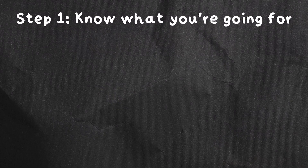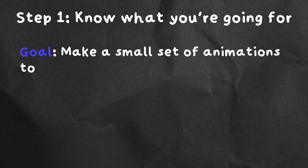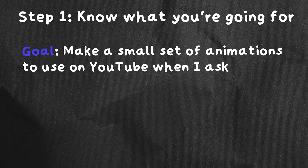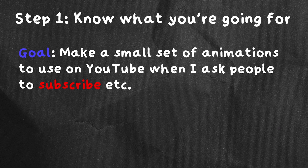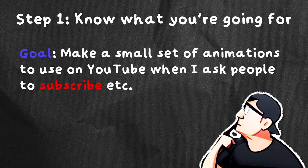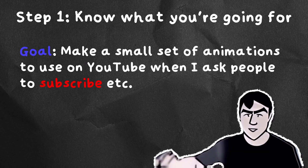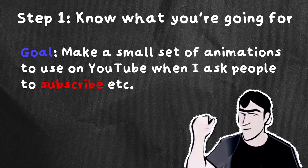I will of course be your tour guide to show you Gen 1 today. But before we jump into all that, we have to go into step number one. Step number one is: know what you're aiming for. My animation goal today is to make a small set of animations that I can put on screen during my YouTube videos — so whenever I ask you to subscribe, comment, or smash that notification bell, I have some fun animations to go along with it. Knowing what you want means step number two is: find or film your input videos for Gen 1.